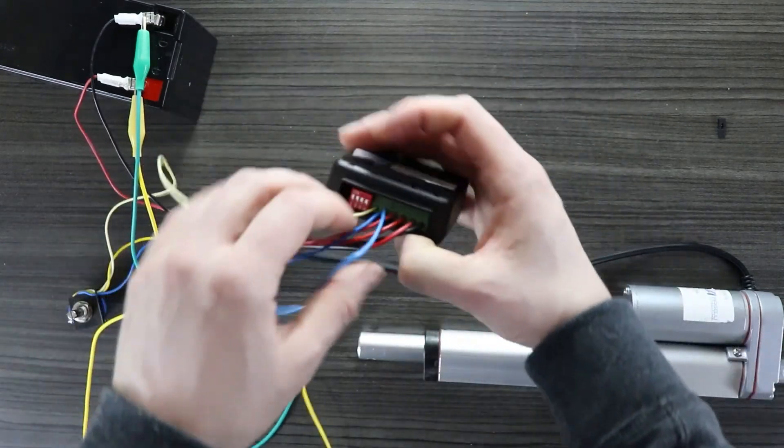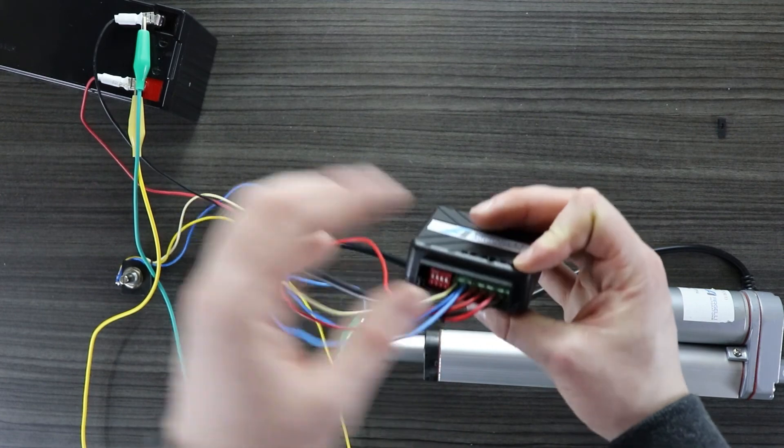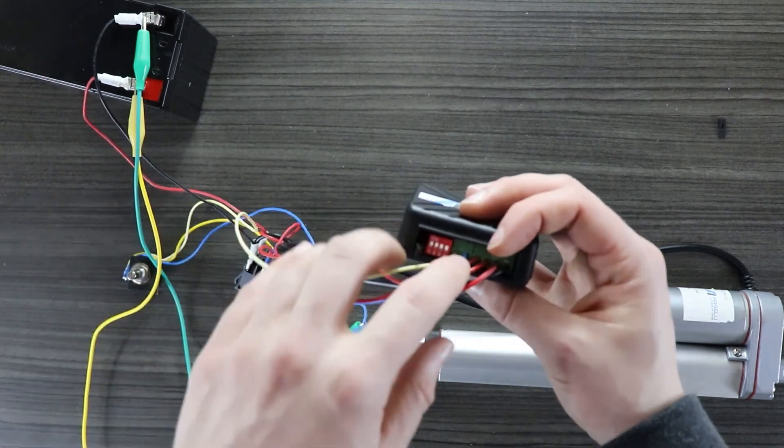Now what you could also do is remove this potentiometer and connect it up to an Arduino or a PLC, some sort of microcontroller. And then you can write software to vary the speed.